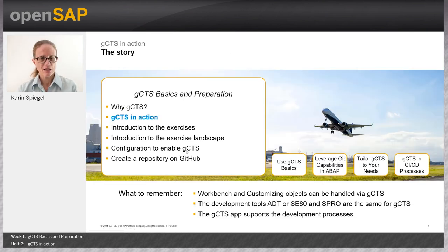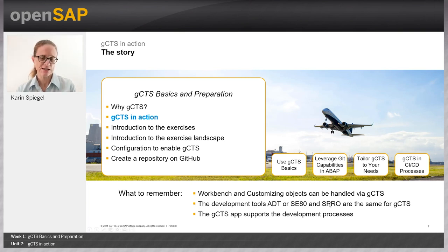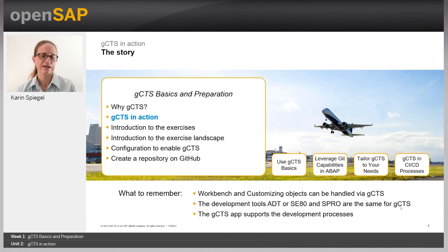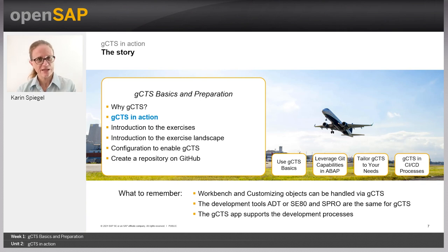That's it for GCTS in action. What you should remember: workbench and customizing objects can be handled via GCTS. The development tools ADT or SE80 are still valid and can be used. S-PRO is still the transaction for customizing. All of them create transport requests that can be pushed to Git if GCTS is enabled and the transport request uses a GCTS-enabled transport layer. Thank you very much — hope you got the points and see you in the next unit.